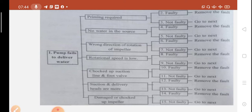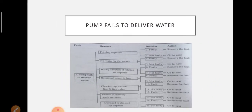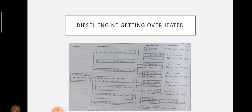Next: diesel engine getting overheated. This is the decision tree for diesel engine overheated. First of all, when the diesel engine becomes overheated, check the coolant circulating pump.